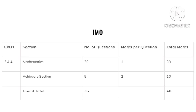For Class 4, I am on Level 2. There are two sections. The first section is Mathematics — number of questions are 30 and marks allotted is 1. The second or last section is the Achiever section — number of questions are 5 and each question carries 2 marks. Total time given is 60 minutes.